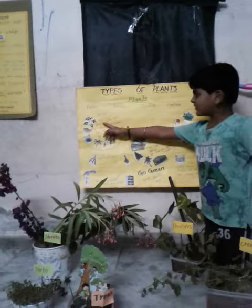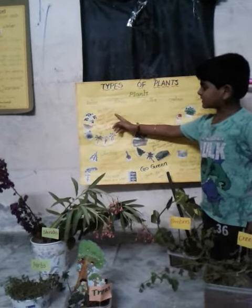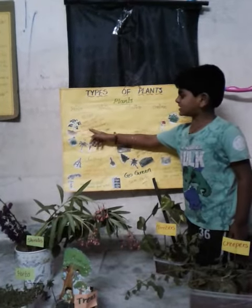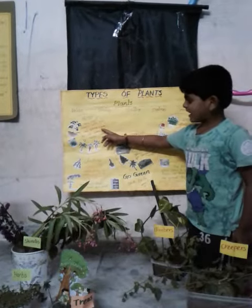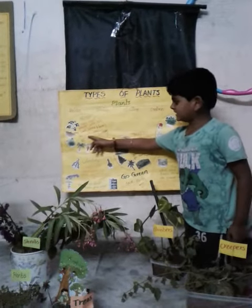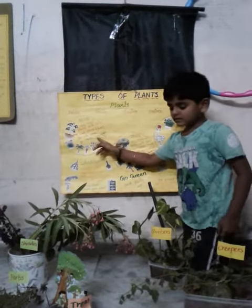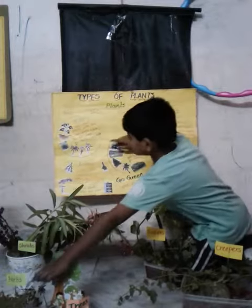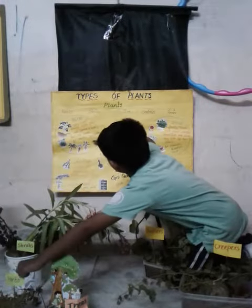First one, herbs. Very small plants with thin, green and weak stems and have less life span. Examples: methi, coriander.